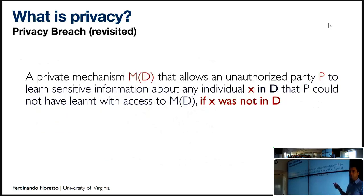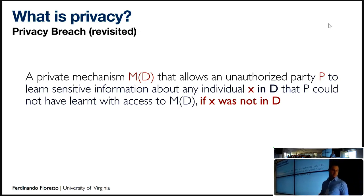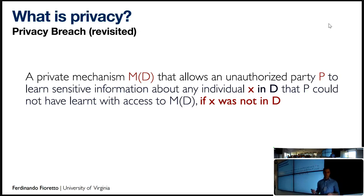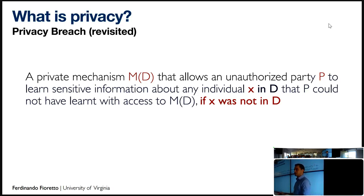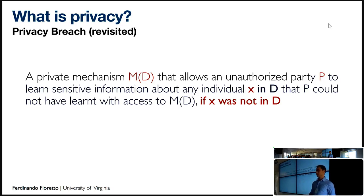So let's redefine privacy breach. We want a mechanism M that takes dataset D, and a party P can learn sensitive information about individual Alice only because Alice is present in D — information that could not have been learned if she did not participate. For example, learning her name or last name, which could not have been learned if she did not participate in the dataset.